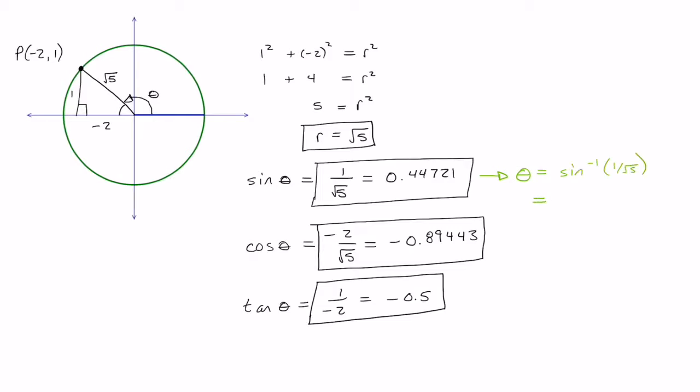So the first ratio, if I go sine inverse of 1 over root 5, I get 27 degrees. For the cosine, if I use that ratio, I go cos inverse of negative 2 over root 5 and I get 153 degrees.